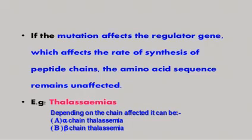Depending on the chain affected, it can be known as alpha chain thalassemia or beta chain thalassemia — alpha chain thalassemia if it affects the rate of synthesis of the alpha chain, and beta chain thalassemia if it affects the rate of synthesis of the beta chain. In this case there is no point mutation, so the sequence of amino acids is unaffected.